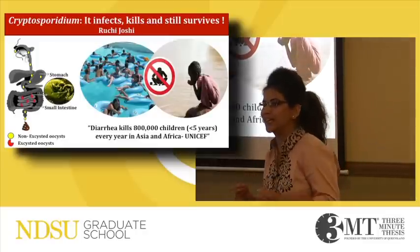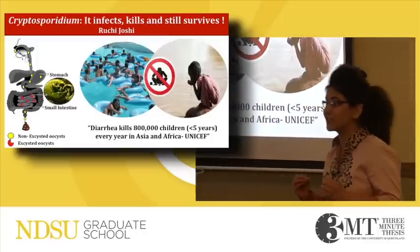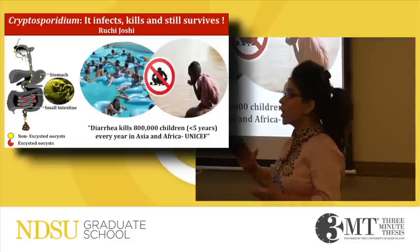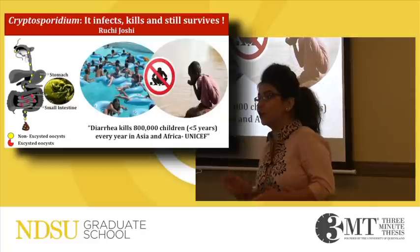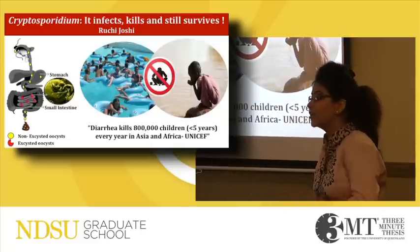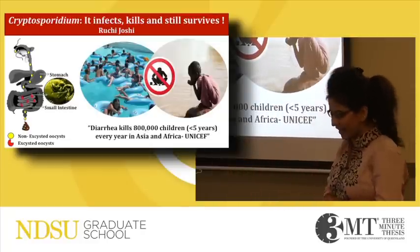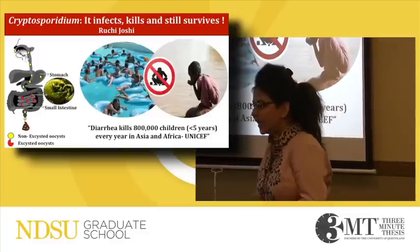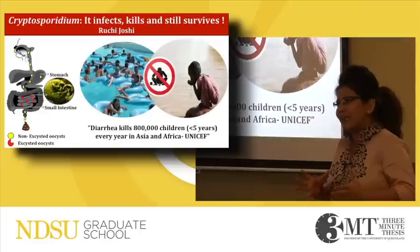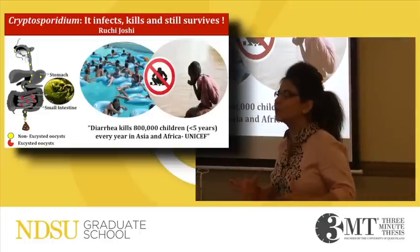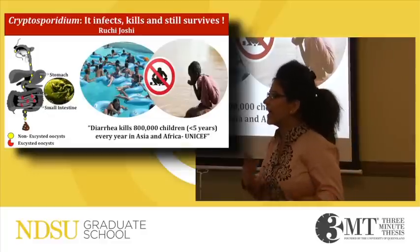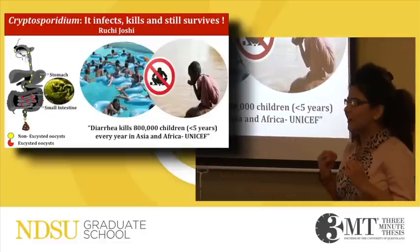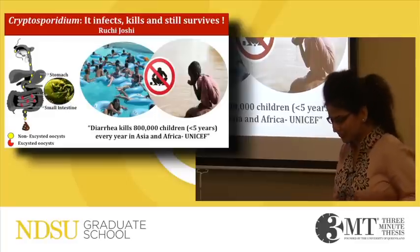It is a waterborne parasite that causes cryptosporidiosis, an acute diarrheal disease that affects humans and animals globally. The first human case was detected in 1976 in rural Tennessee, and since then, there is no effective treatment for cryptosporidiosis. In healthy individuals, this disease can be self-limiting and controlled. However, in people with a weak immune system, such as kids, elderly people with AIDS or cancer, this disease can be life-threatening and fatal.